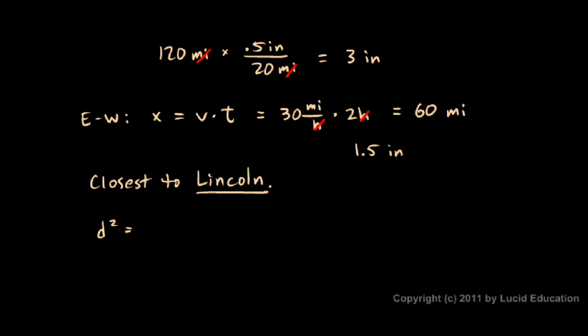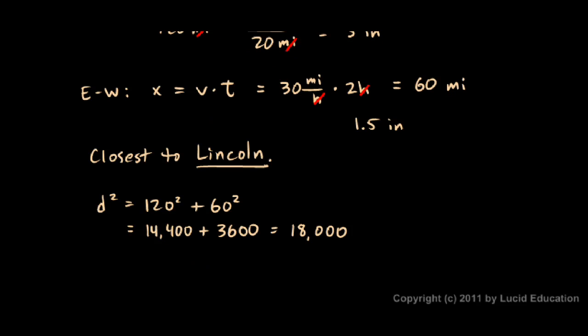I know that D squared is going to be 120 squared plus 60 squared. Just apply the Pythagorean theorem. And that comes out to 14,400 plus 3,600, which adds up to 18,000. And that's D squared. So to find D, we have to take the square root of that. D is the square root of 18,000. And that comes out to 134 miles.